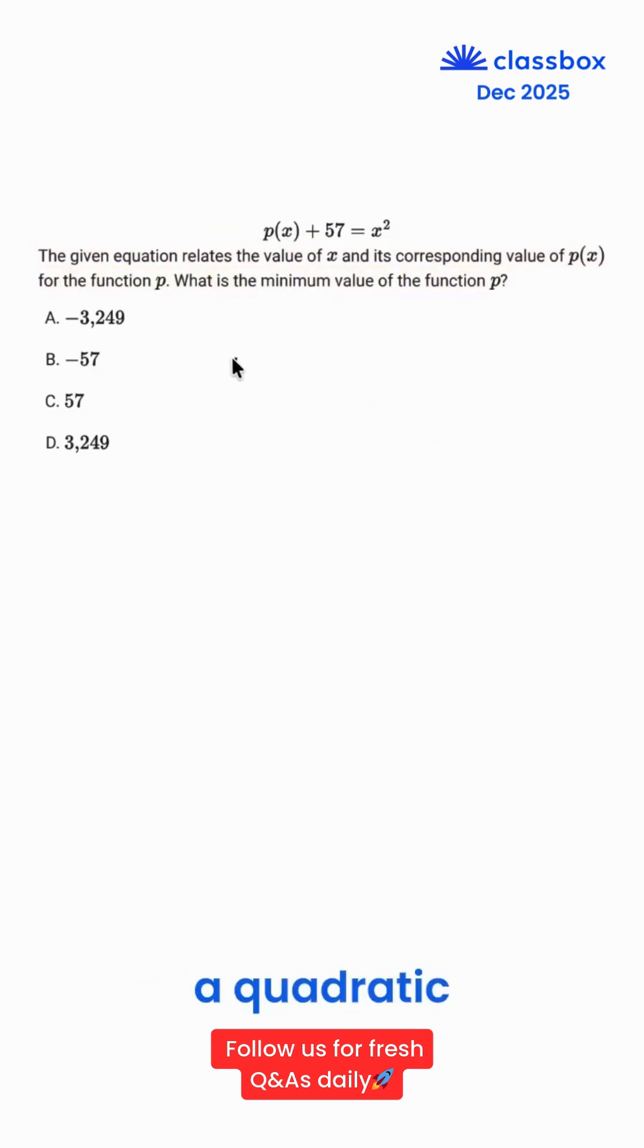So we're given a quadratic equation. By subtracting both sides by 57, we get p(x) is equal to x squared minus 57. That's a quadratic equation.